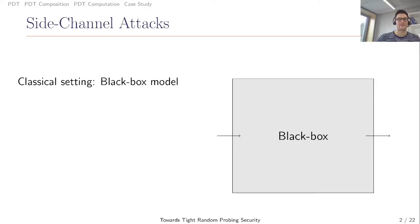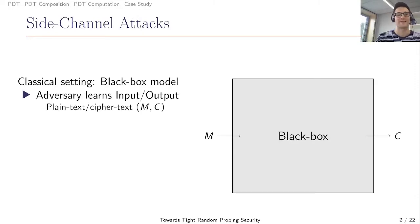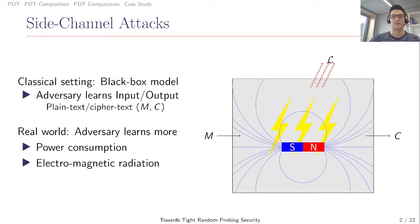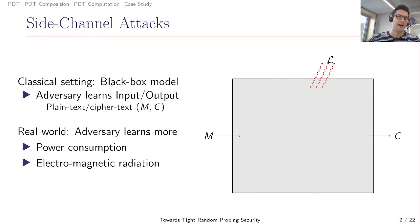In the classical cryptography, we often use the black box model. Here the adversary only learns about the input-output behavior of a cryptographic primitive, for example, the plaintext ciphertext pair of an encryption scheme. But this is not the case in the real world. The power consumption of a device might leak secret-dependent data, for example, the key of an encryption scheme. The same holds for electromagnetic radiation caused by current flows.